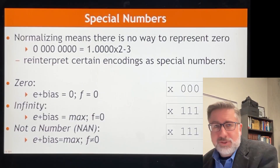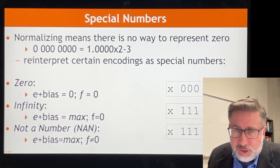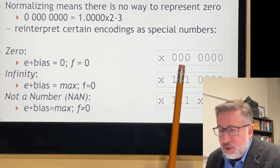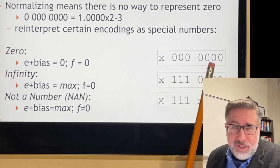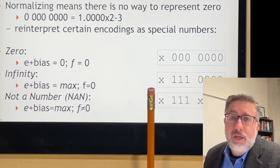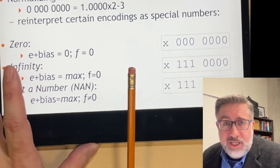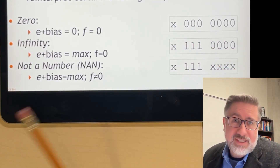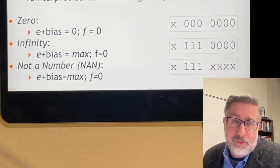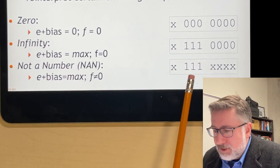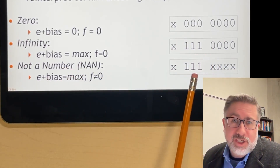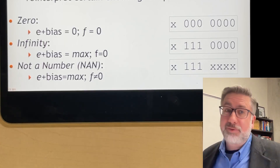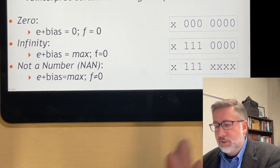Now we have these special numbers. Zero is represented as the exponent being zero and the significand being zero. Infinity is represented as the exponent being all ones and the significand being zero. Not a Number is represented as the exponent being all ones and the significand being something else, not all zeros.